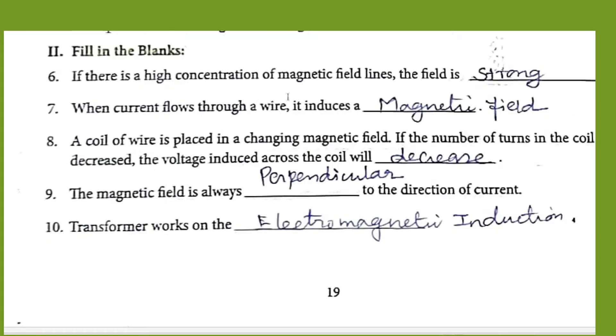Fill in the blanks. If there is a high concentration of magnetic field lines, the field is strong. When current flows through a wire, it induces magnetic field. A coil of wire is placed in a changing magnetic field. If the number of turns in the coil is decreased, the voltage induced across the coil will decrease. The magnetic field is always perpendicular to the direction of current. Transformer works on the electromagnetic induction principle.